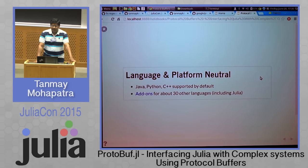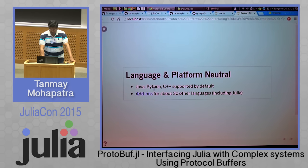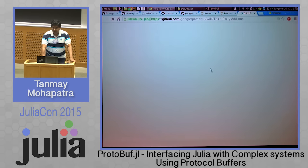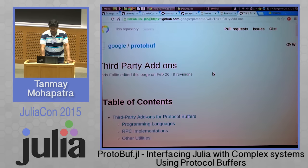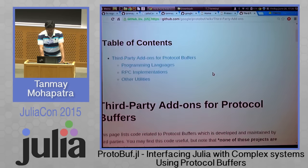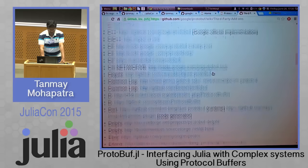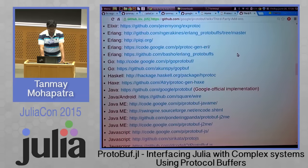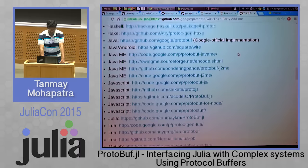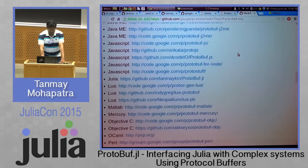By default, the distribution that you download would have support for Java, Python, and C++. But there are some 30 other languages which are supported through add-ons, including Julia. This is a list of add-ons — you can find support for all these languages, and here is Julia.